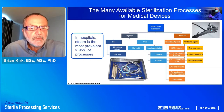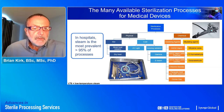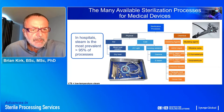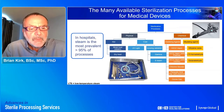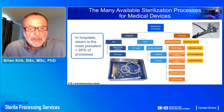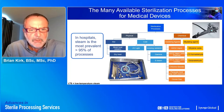On the left-hand side we have physical processes, divided into hot and cold processes. The hot processes include moist heat — steam sterilization — and dry heat. Moist heat sterilization is very familiar to hospital practitioners; probably 95% of processes are carried out using it. The cold processes include UV light and ionizing radiations such as gamma and E-beam, which are used extensively in manufacturing, less so in hospitals.